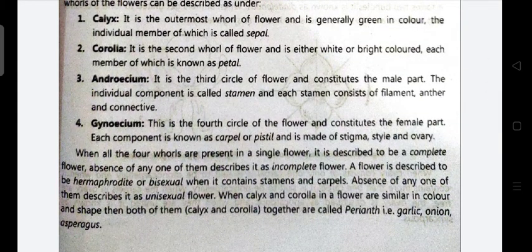The calyx is the outermost whorl of the flower and is generally green in color; each member is called a sepal. Next is the corolla — it is the second whorl of the flower and is either white or brightly colored. Each member of the corolla is known as a petal.